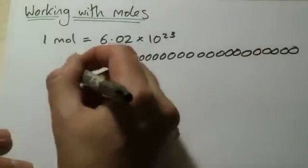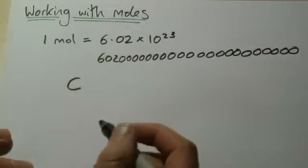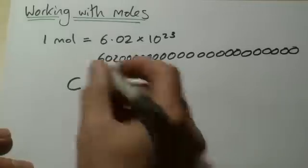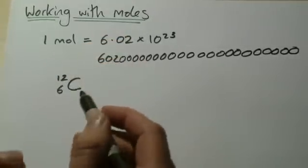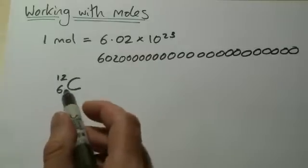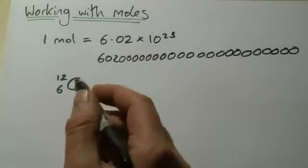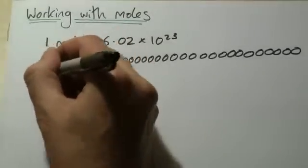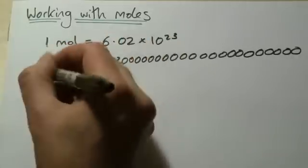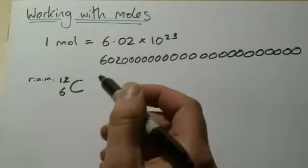What does that mean? Well, let's take carbon. If you look at carbon on the periodic table, it has numbers 12 and 6. The atomic number 6 tells you how many protons are in the nucleus and also how many electrons. The top number, the relative atomic mass, tells you the number of protons plus the number of neutrons.